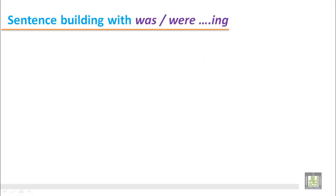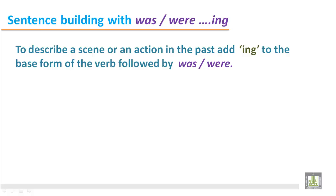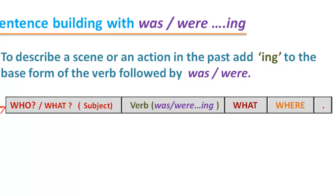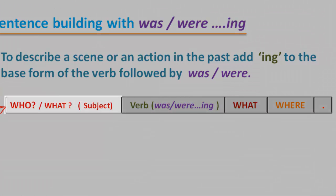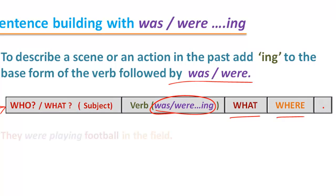Sentence building with was or were and the verb -ing. To describe a scene or an action in the past, we add -ing to the base form of the verb followed by was or were. This structure shows the subject—who or what, whether a person, animal, or thing—then the verb was or were before the verb with -ing. After that, you can put information about what or where.